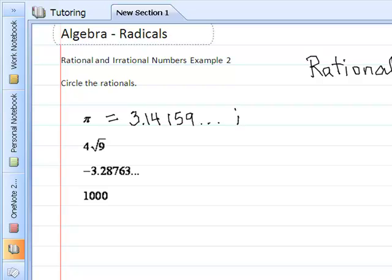This is what we would call irrational. The symbol for irrational is simple. If q means rational, put a line over the top, and that means irrational. This is not a rational number, so we don't circle it. We go to the next one.